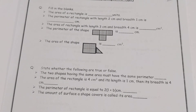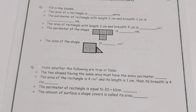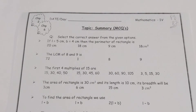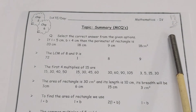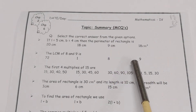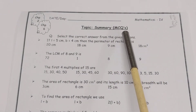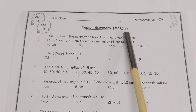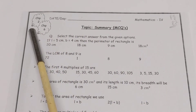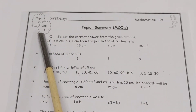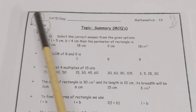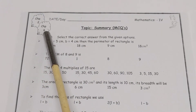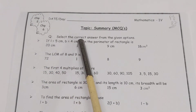Now come to the next booklet page number 82. On page number 82, MCQs are given and these MCQs are related to chapter number two and chapter number six. For these MCQs you have to revise all the topics related to chapter two and chapter six. Let's start — select the correct answer from the given options.